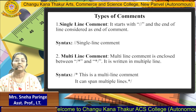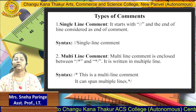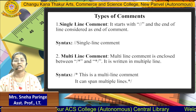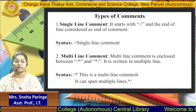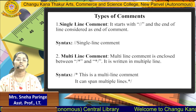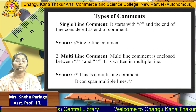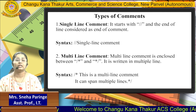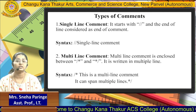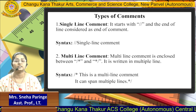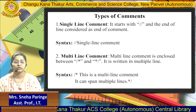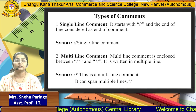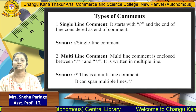The second type is the multi-line comment. A multi-line comment is enclosed between slash-star and star-slash and is written in multiple lines. Whenever you want to write a comment that spans multiple lines or the explanation is bigger, you will use this multi-line comment as shown in this syntax. You write slash-star, then whatever explanation you want to give for that particular code, and then close that statement with star-slash.